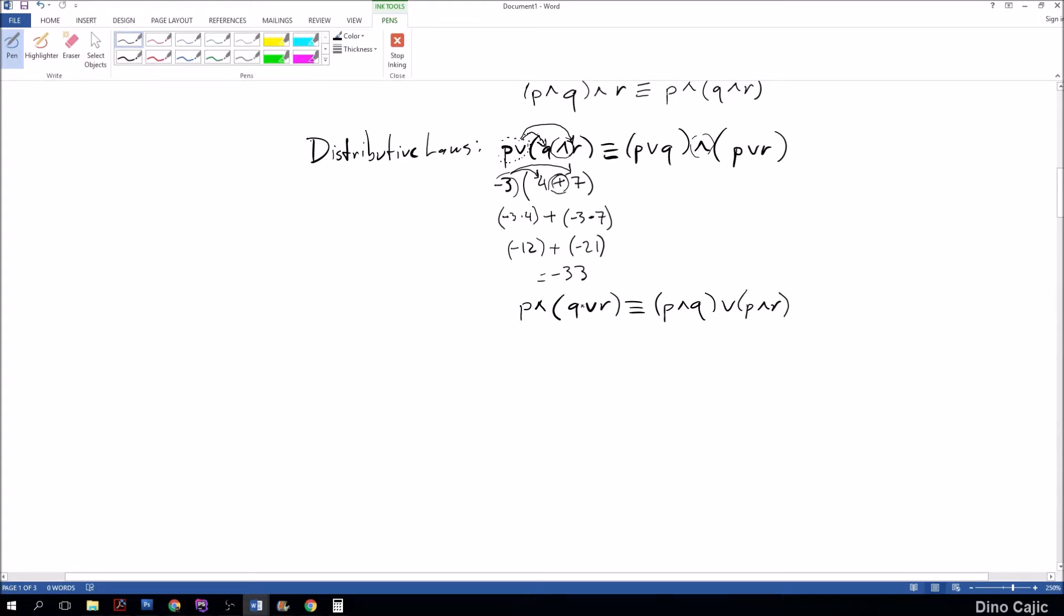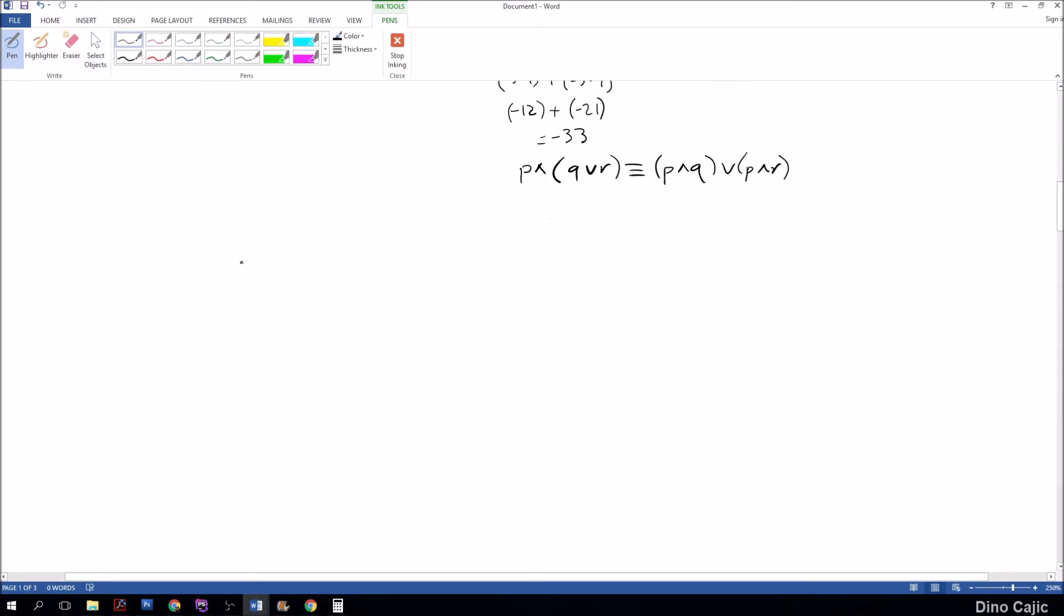So right here, the P is with the conjunction, and the Q and R are with a disjunction. So we take this entire thing and distribute it. So P and Q or P and R.